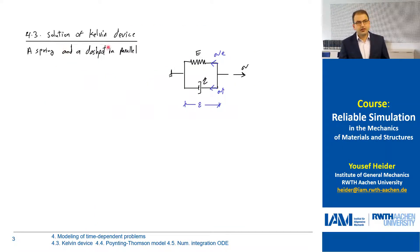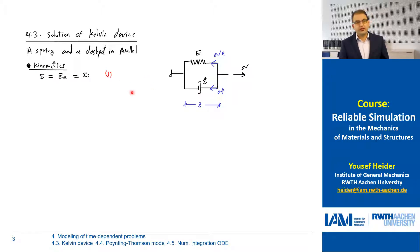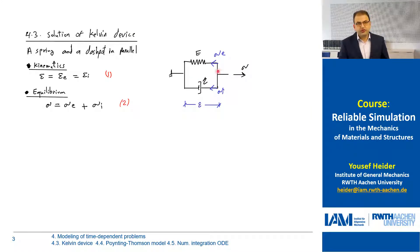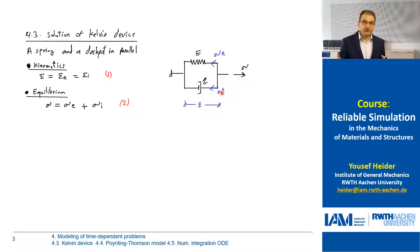This is the typical Kelvin device. As I said, it consists of a spring and a dashpot in parallel. To describe the response of this, we start with the kinematics. The strain in the elastic branch and the viscous branch are equal, which is epsilon, the total strain of our model. If we look at the equilibrium, we see that if we apply stress, it would be distributed into the two branches. So we have the elastic stress and the inelastic stress, which represents, in this case, the viscosity.